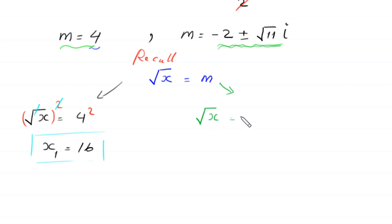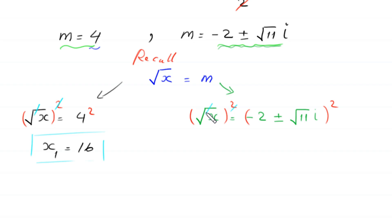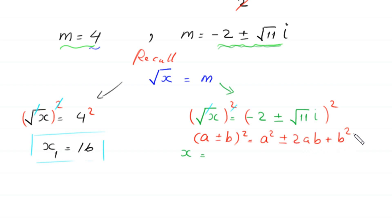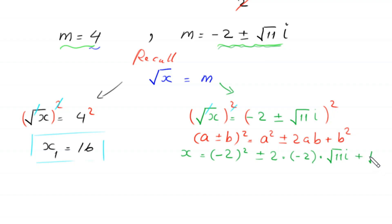When m equals negative 2 plus or minus root 11 i, we have square root of x equals negative 2 plus or minus root 11 i. Squaring both sides and using the identity (a plus or minus b) squared equals a squared plus or minus 2ab plus b squared, we expand (negative 2 plus or minus root 11 i) squared.